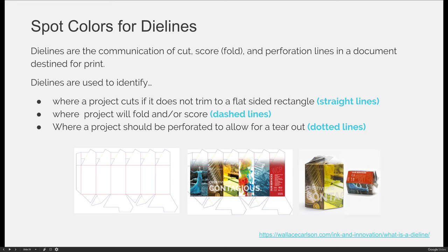You can use the dye line to identify where it folds, but you can go one step above that to identify where it should score. What we do with the die is press a rounded piece of metal against everywhere it should fold to make an indent, so if someone had to hand fold these packages, the product would naturally want to fold where it's been creased. We can also identify where a project should perforate — to allow something to tear out of a book or a project, or maybe a little tab — and we'll use dotted lines to identify that.